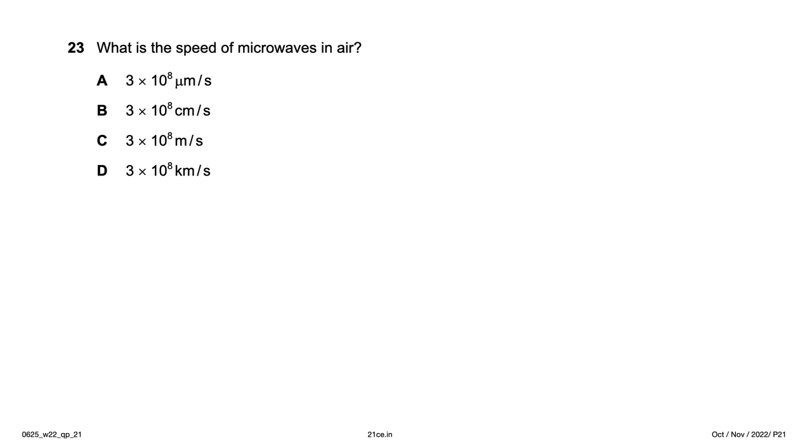What is the speed of microwaves in air? Microwaves are electromagnetic waves, and all electromagnetic waves travel at 3 × 10⁸ m/s — option C.